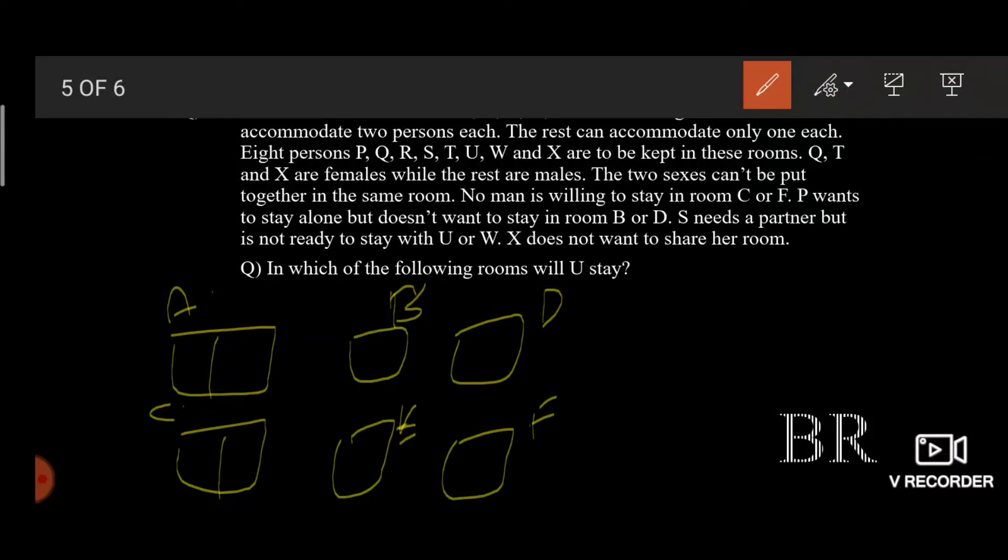Eight persons P, Q, R, S, T, U, W and X are to be kept in these rooms. Q, T and X are females, so rest are males. Now pay attention guys. A, B, C, D, E and F are the rooms in the guest house. And P, Q, R, S, T, U, W and X are the persons that are kept in these rooms. I'm denoting female as minus and I'll be denoting male as plus.